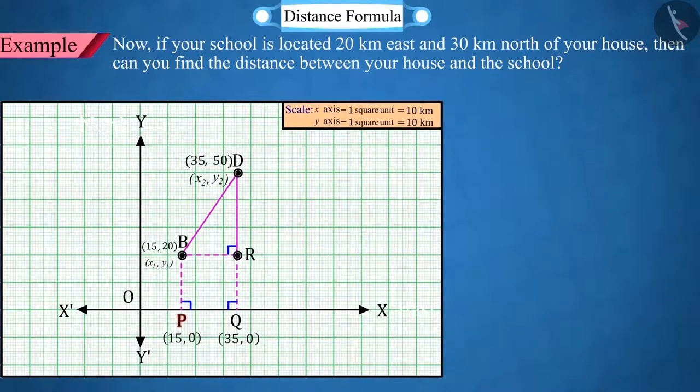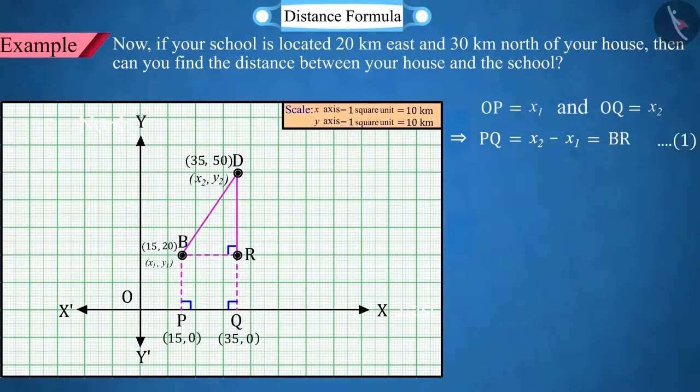Here, OP equals x1, OQ equals x2, so PQ equals x2 minus x1 which is equal to BR. And looking carefully at the graph, QD equals y2 and QR equals y1 which is equal to PB.